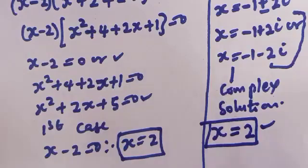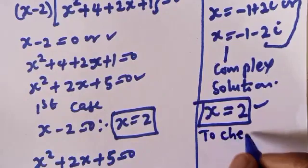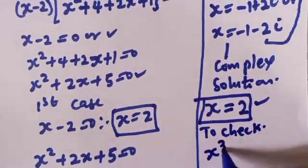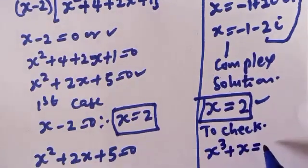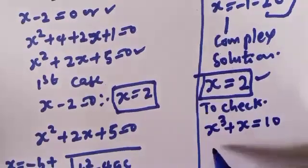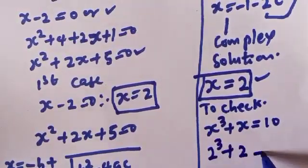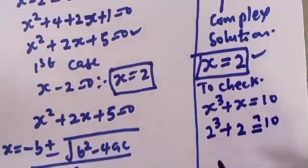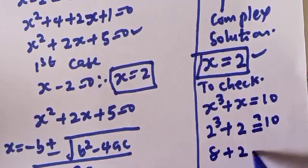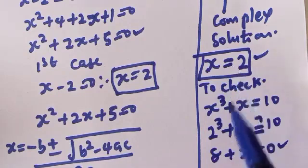We can check to confirm if our answer is right or wrong. To check: we have s raised to power 3 plus s must be equal to 10. When s is equal to 2, this is 2 raised to power 3 plus 2 must be equal to 10. 2 raised to power 3 is 8, plus 2 equals 10, which satisfies the given equation at s equal to 2.